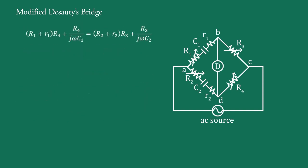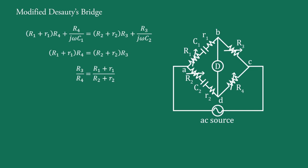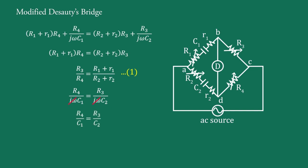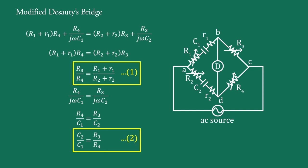Equating the real and imaginary parts of this equation, we get: from the real parts, (R1 + r1) · R4 equal to (R2 + r2) · R3. From the imaginary parts, R4/jωC1 equal to R3/jωC2, which gives C1/C2 equal to R4/R3. These are the bridge balance conditions.